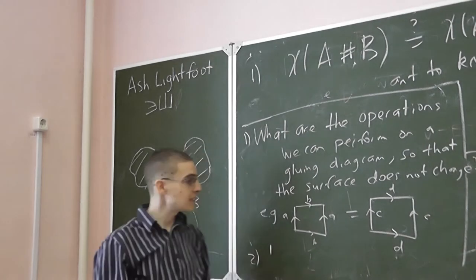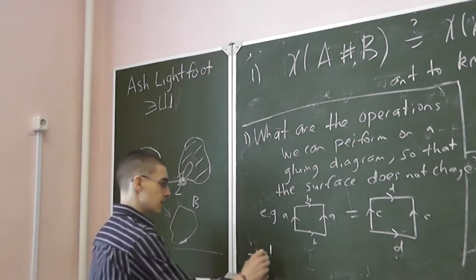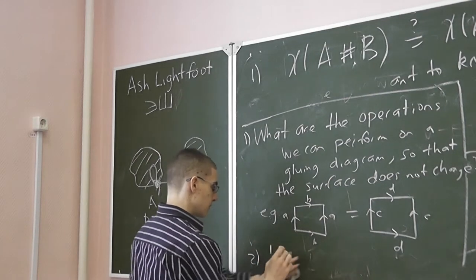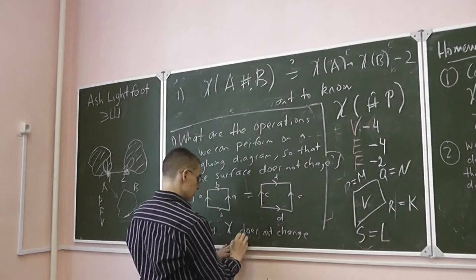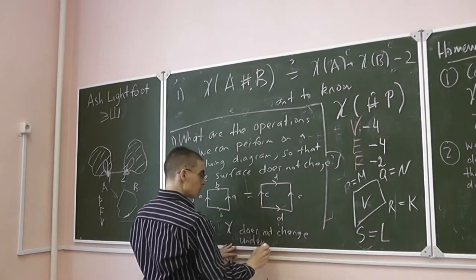So in this instance the Euler characteristic doesn't change, so check or verify χ does not change under these operations.